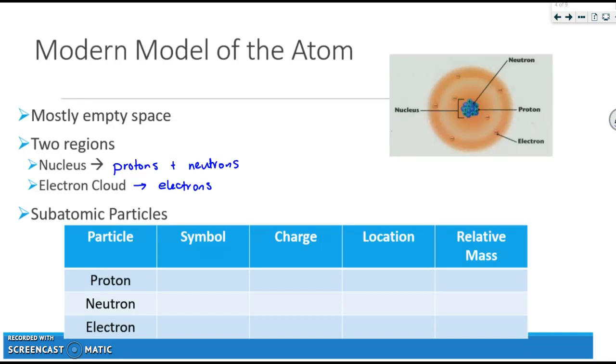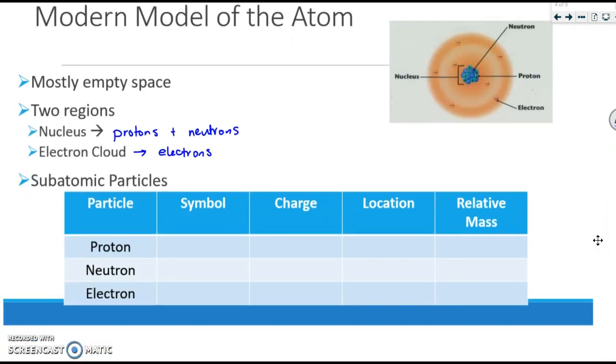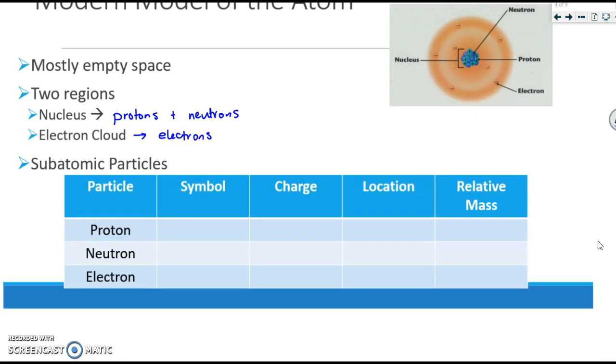Down below is a chart on subatomic particles. Again, for the most part should be reviewed from some science class that you previously have taken. Protons are usually represented with a P. Neutrons are an N, and electrons are an E with a negative. Protons have a positive charge. Neutrons are neutral, and electrons are negative 1. The protons and neutrons are both in the nucleus, as noted above. And the electrons are found in your electron cloud. Relative mass to one another, we say that protons and neutrons both have a mass of 1, and that electrons have a mass of 0, because they're actually about 2,000 times smaller than your protons and your neutrons. So these two particles are going to make up the mass of your atom.